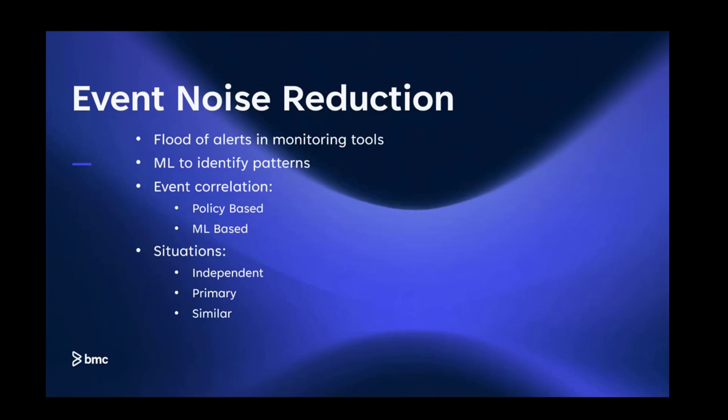For those of you who've worked on BHOM, there is policy-based event correlation where you write a policy in BHOM and it correlates events based on that policy. When AIOps is correlating events, you don't have to write any policy — the AI ML algorithms do it automatically. Situations are created automatically. The three types are independent, primary, and similar situations.